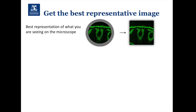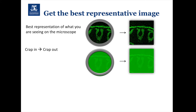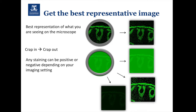So what are we trying to do when generating digital images? We're trying to get the best representation of what we're seeing down the eyepiece in our actual image. The rule is: if you put rubbish in, you get rubbish out. Unfortunately, if you know — or conversely don't know — what you're doing with microscopy setups, you can make data that looks poor look pretty good, or data that looks good look pretty poor.